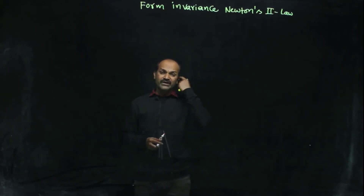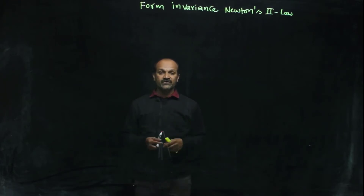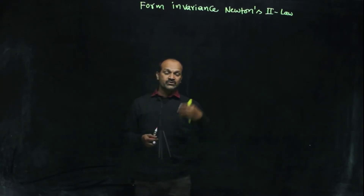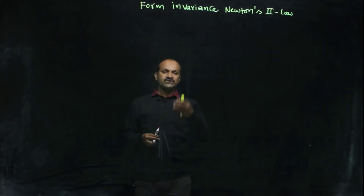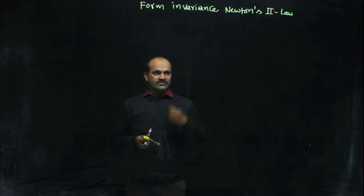Any number of inertial frames of reference you take — with respect to any inertial frame of reference — if you try to find out some values using Newton's second law, it should not be altered, it should not be different. You have to get the same value. That is form invariance — the form does not change. We will see that now.